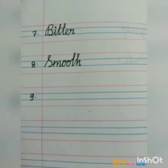Eighth dictation word is Smooth. Smooth means very soft — something that is very gentle or soft in texture. Spell: S-M-O-O-T-H. Smooth.